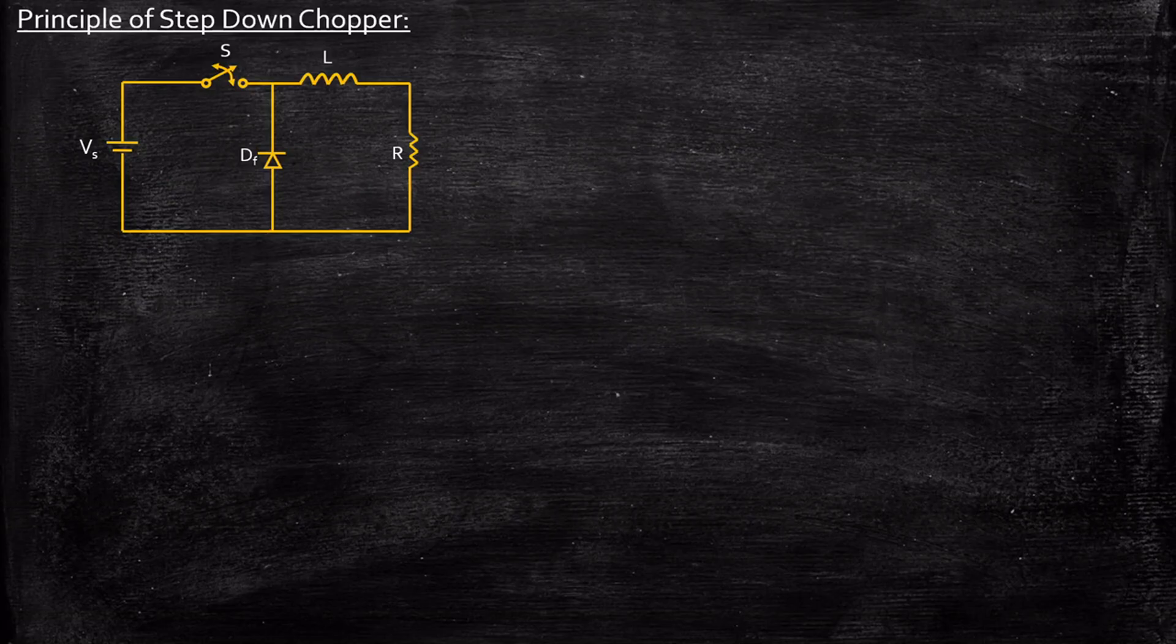Now, how to analyze these type of circuits? We will follow a pattern and the pattern will remain the same for most of the circuits that we are going to observe. We will consider something like what happens during turn on and what happens during turn off.